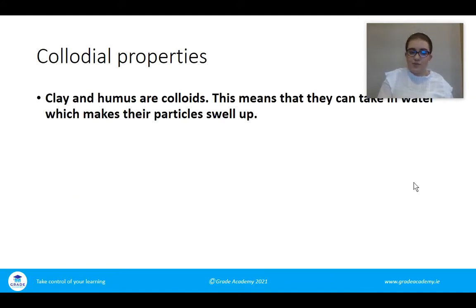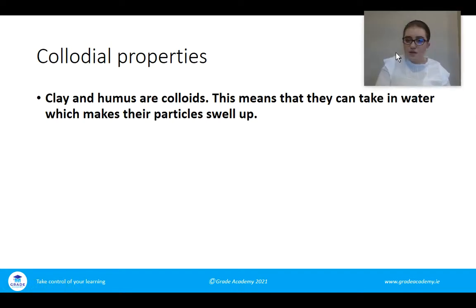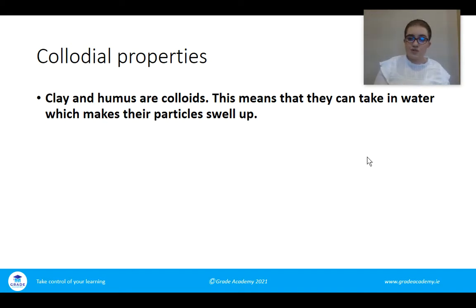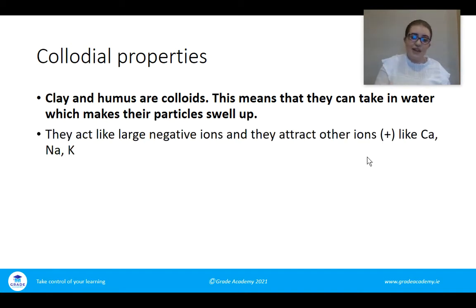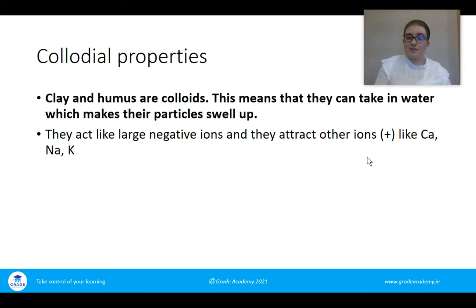The second area is colloidal properties. Clay and humus are colloids — this means they can take in water, which makes their particles swell up. They're good at absorbing water, which is needed for chemical reactions in the soil, for plant hydration, and as a solvent to bring minerals around the plant and soil. Clay and humus act as negative ions and attract positive ions such as calcium, sodium, and potassium.